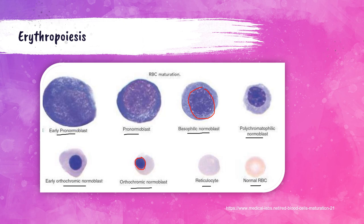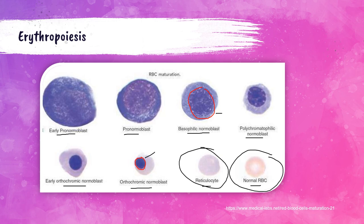Notice the size of the nucleus across stages: the pronormoblasts have pretty large nuclei, and it gets smaller and smaller as the cell progresses through maturation. The nucleus gets smaller as the cell gets smaller overall. Now look at the reticulocyte and the normal red blood cell — the nucleus is missing. For red blood cells, as the cell matures, the nucleus gets smaller and eventually expels right out of the cell. Reticulocytes and normal mature red blood cells do not have a nucleus.